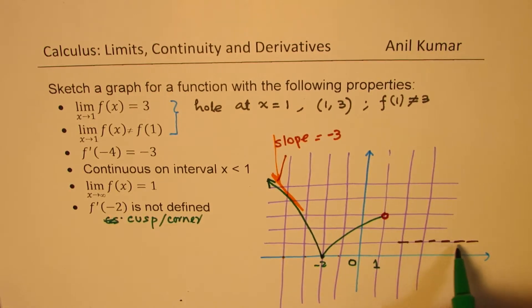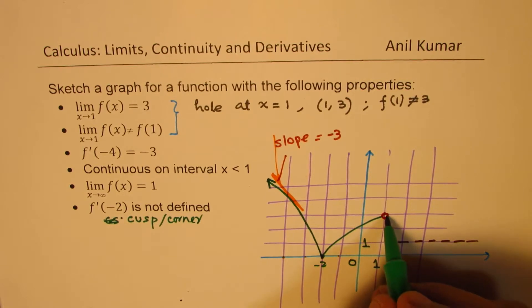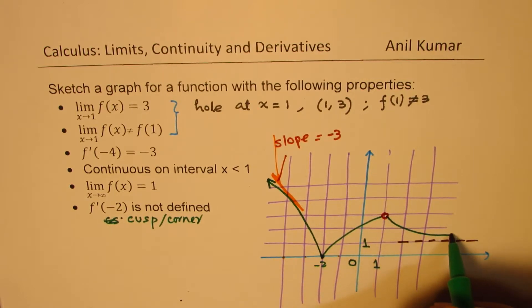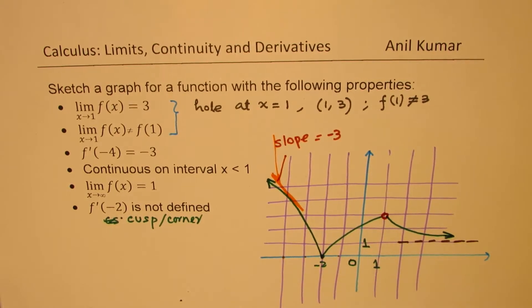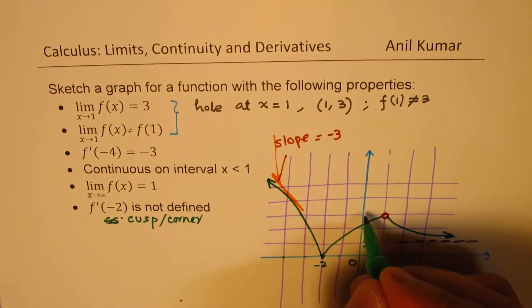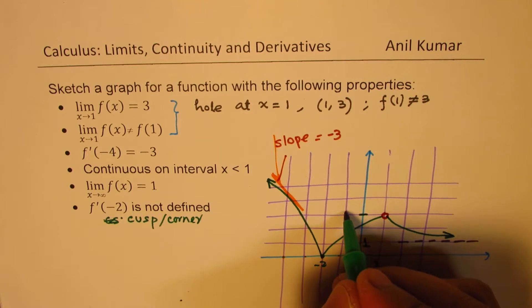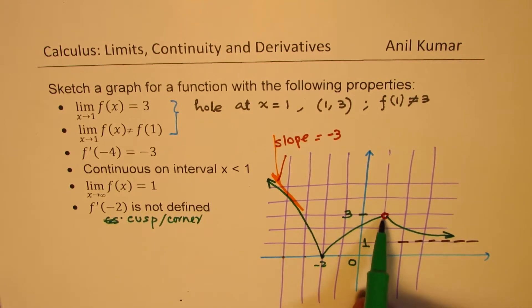And now, we have to approach 1, horizontal asymptote. So it could go like this. Doesn't make sense to you. So this point here will be 3 for us. So we are approaching 3.